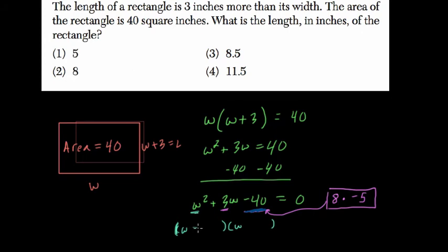So here, I can write in any order, w plus the first term, 8, and w plus negative 5, or just w minus 5.